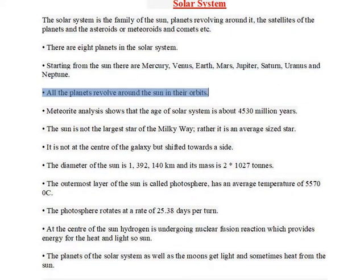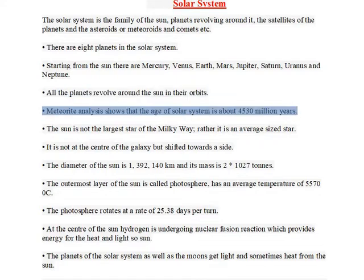All the planets revolve around the Sun in their orbits. Meteorite analysis shows that the age of the solar system is about 4,530 million years.